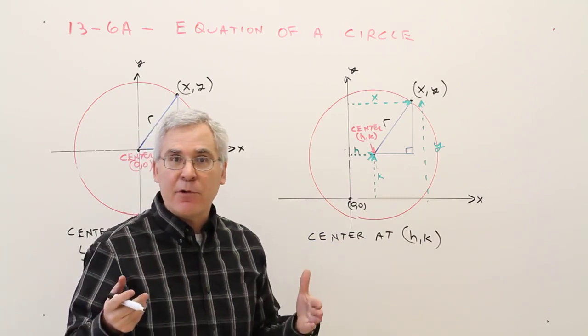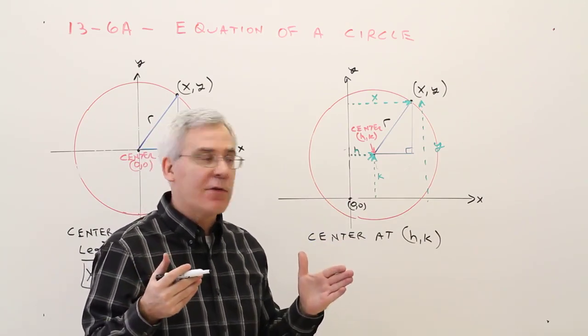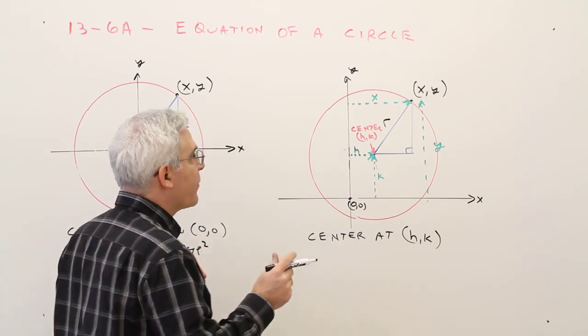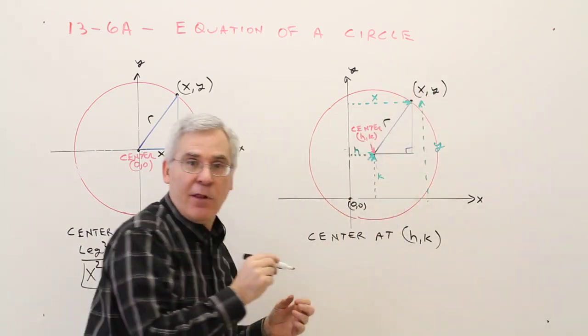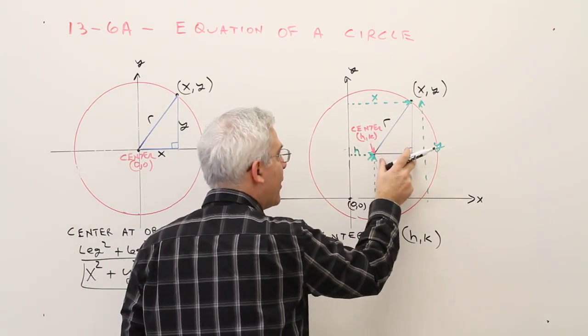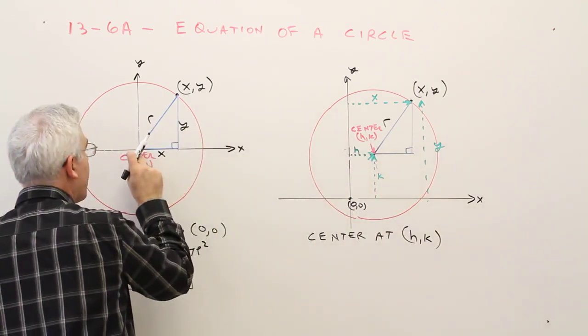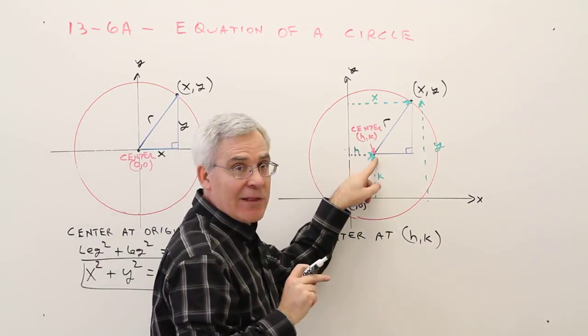Okay, it's going to be a similar thing. All I've got to do now is adjust. So I'll show you. This point over here is still x, y, but now my triangle, instead of being originated to the origin, it's at h, k.